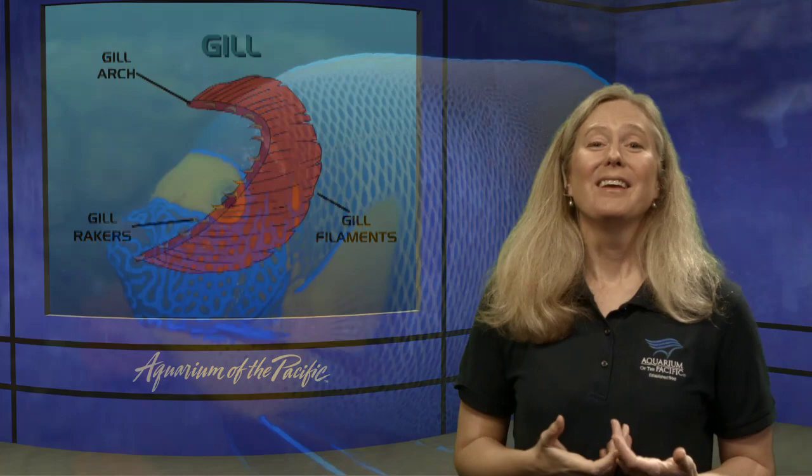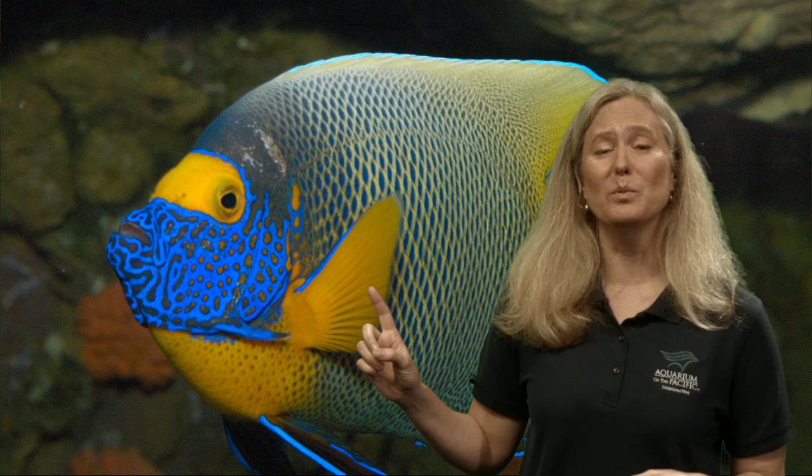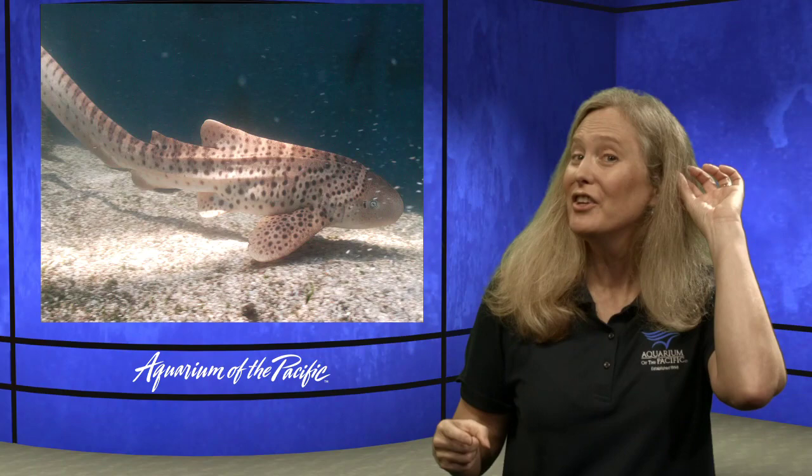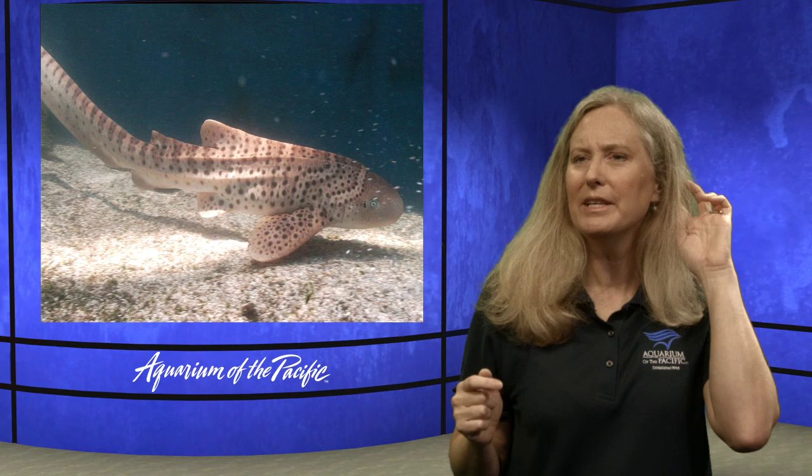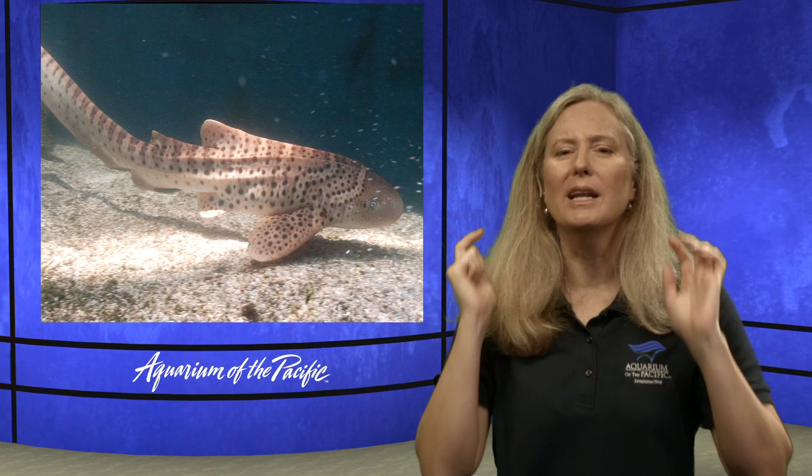Both fish and sharks have gills. But bony fish — with skeletons made of bones — are different from sharks and rays, which have skeletons made of cartilage. Cartilage is something you and I have as well — your ears and your nose. They're much more flexible than say your elbow, which is made out of bone. Your nose and ears are made of cartilage, much more flexible. And that's what the skeleton of sharks like this zebra shark is made of.